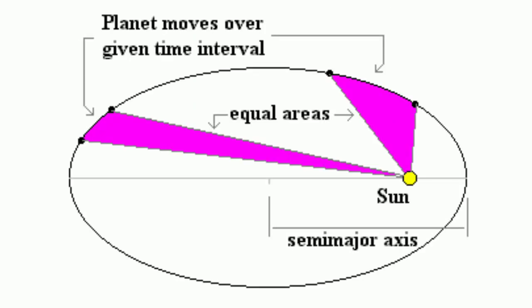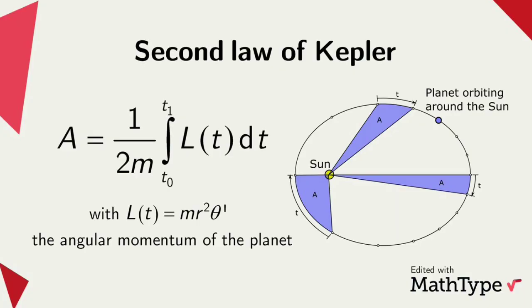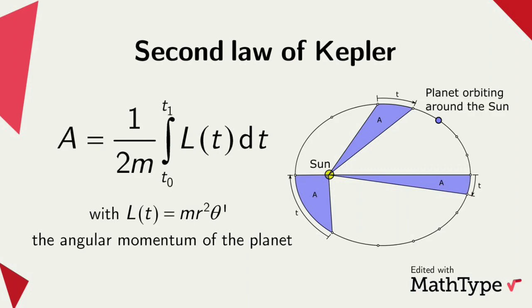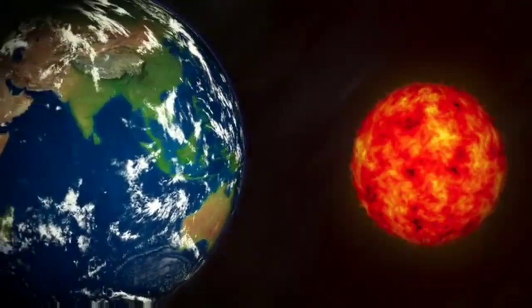If we draw an imaginary line from the sun or from the center of the sun to the very center of the planet, then that line will sweep out equal area in equal intervals of time. What does it mean?